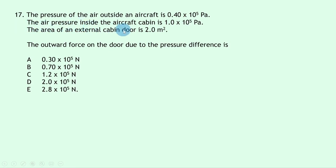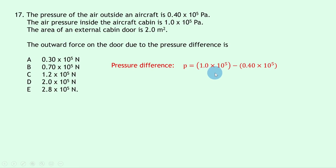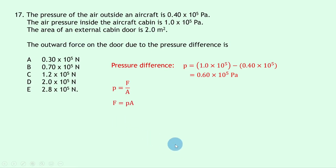Question 17: air pressure outside an aircraft is 0.4 × 10⁵ Pa, inside is 1 × 10⁵ Pa, door area is 2 m². Pressure difference = 1 × 10⁵ − 0.4 × 10⁵ = 0.6 × 10⁵ Pa. Using F = PA: F = 0.6 × 10⁵ × 2 = 1.2 × 10⁵ newtons — answer C.